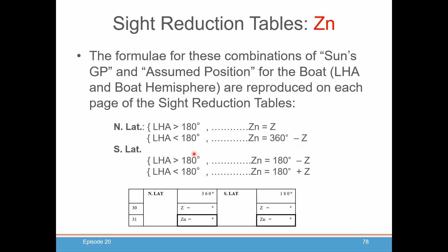In the southern latitude, it's a little bit different. If LHA is greater than 180, you'll be in a morning sight and the Zn is 180 minus Z. And if the LHA is less than 180, it's an afternoon sight and the Zn is 180 plus Z. Basically, you'll find yourself having a little table where, if you're in a northern latitude, you may be using that 360 number, and if you're in a southern latitude, you're definitely using that 180 number. You record Z, whether you're adding or subtracting, and you calculate your Zn.